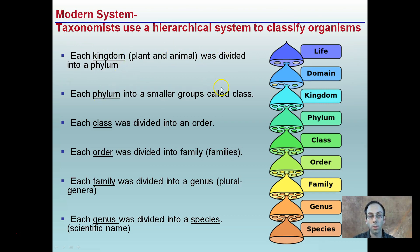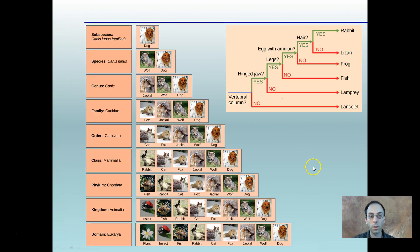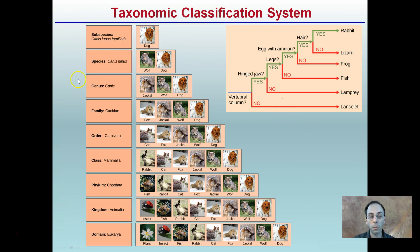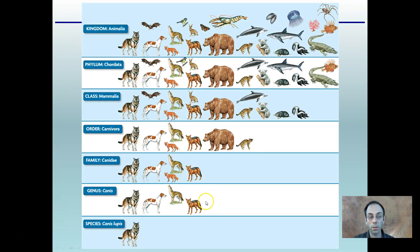In the modern system, each kingdom — plant and animal — is divided into phylum, each phylum into classes, classes into orders, orders into families, families into genus, and each genus into species. Life is the broadest category, then domain, kingdom, phylum, class, order, family, genus, and species being the most specific. All of these levels build on one another and get more and more specific as you move down.